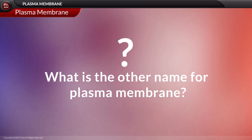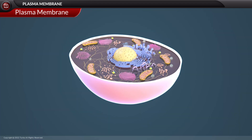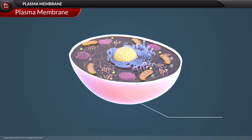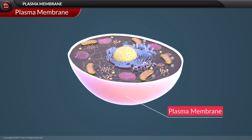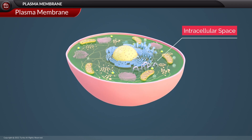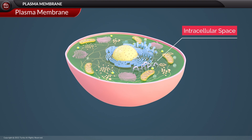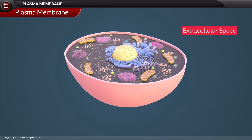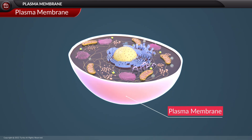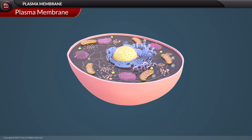The plasma membrane is also called the cell membrane, and it defines the boundary of a cell. There is no cell that exists without the plasma membrane. Its exact role is to separate the intracellular components of the cell from the extracellular space.